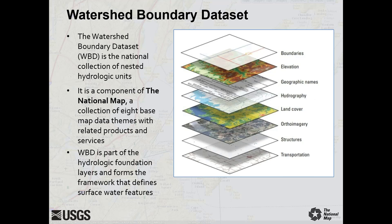The Watershed Boundary Dataset, abbreviated as WBD, is the national collection for nested watersheds called the hydrologic units. It is a component of the National Map, a collection of eight base map data themes with related products and services. WBD is part of the hydrologic foundation layers.